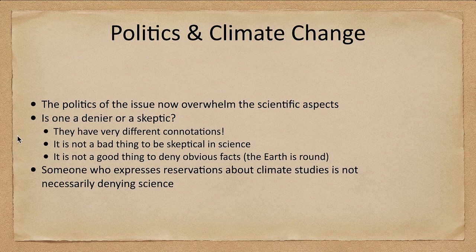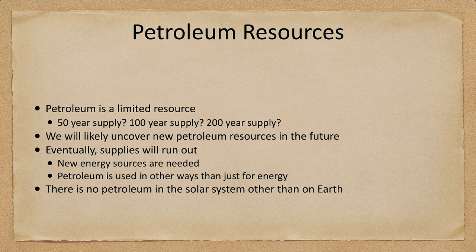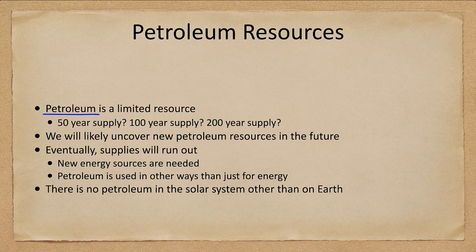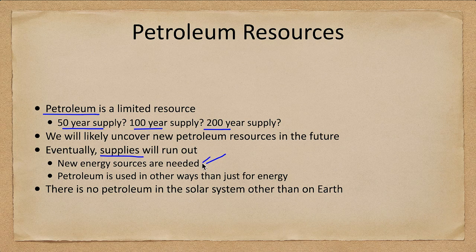What about petroleum? A lot of climate change is related to carbon emissions from petroleum. How much is left? Books from 30 to 40 years ago said we would have run out by now, but we found more. However, it is a limited resource. We will likely uncover new petroleum resources, but whether the supply lasts another 50, 100, or even 500 years, eventually those supplies will run out and new energy sources will be needed — there is simply no way petroleum can replenish itself.